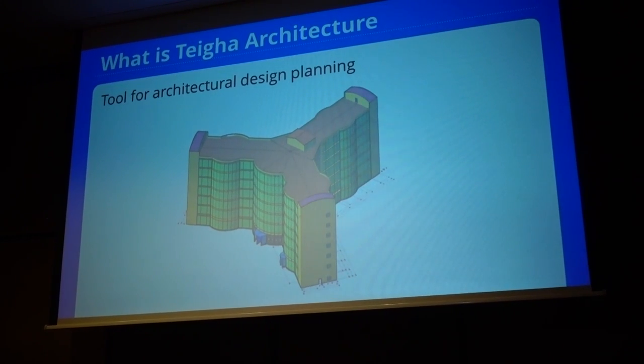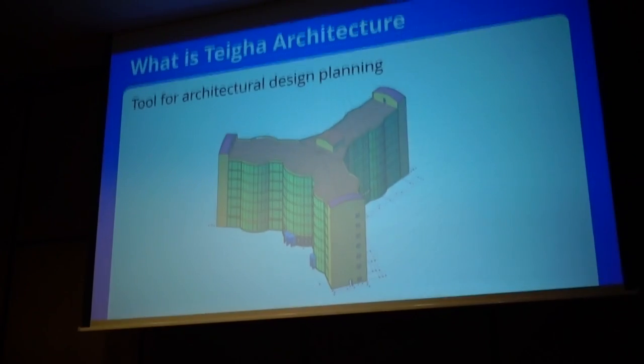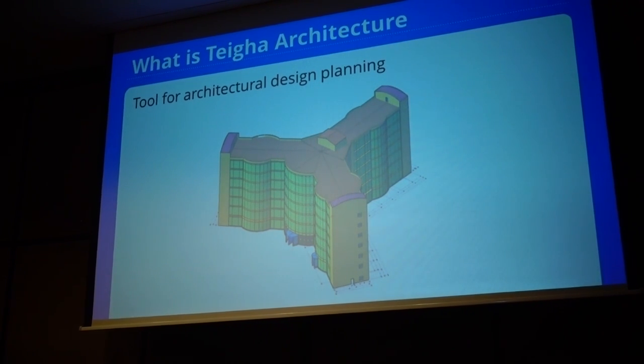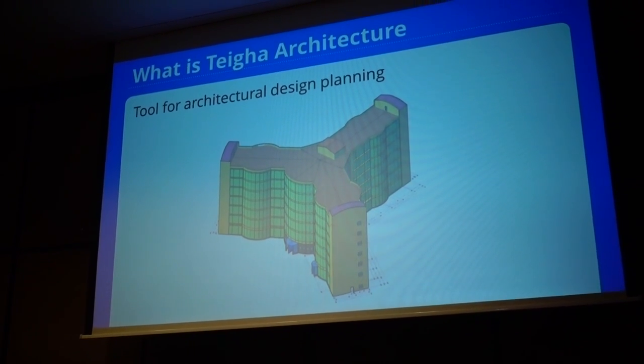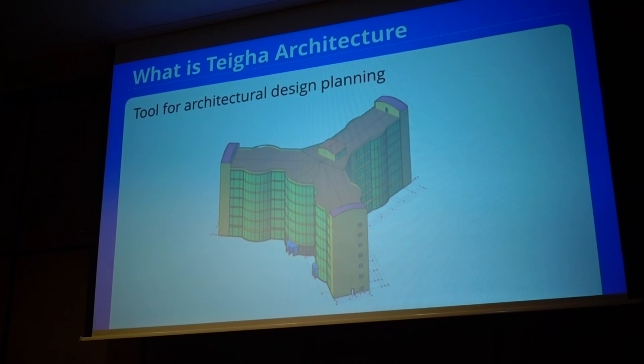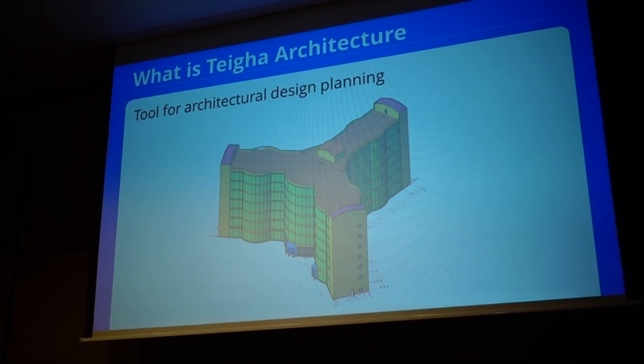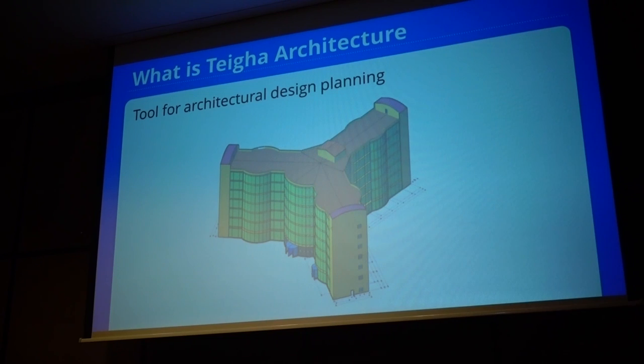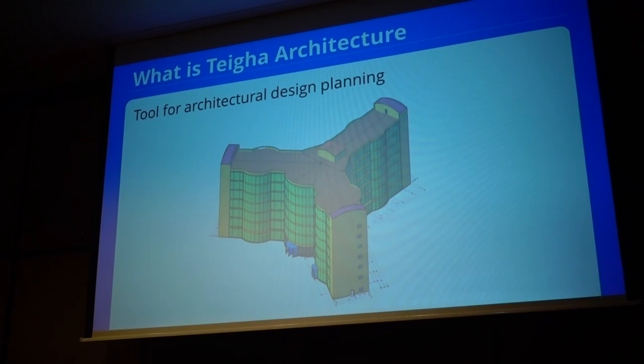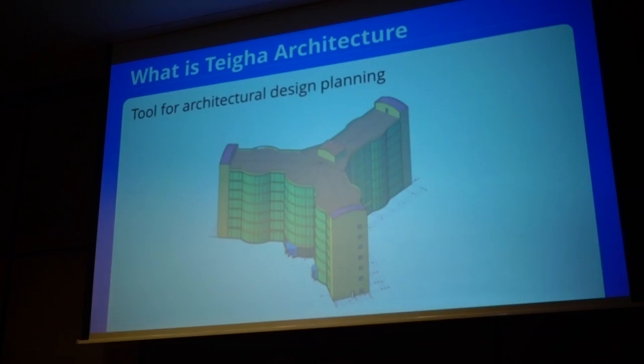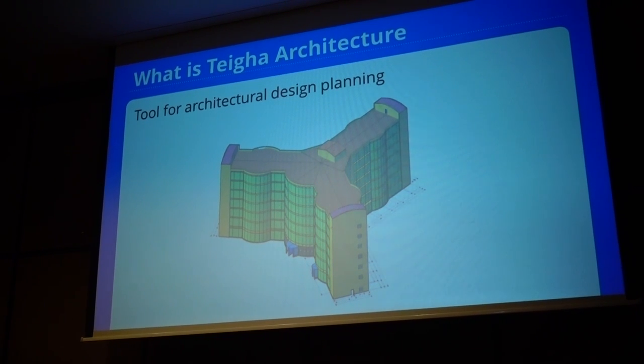Generally, TIGA architecture is a tool for architectural design planning. It's a vertical application based on TIGA core, but unlike core libraries where you have access to basic primitives like lines, text, circles and so on, TIGA for architecture uses an additional set of high-level primitives which are designed for manipulating drawings which represent buildings and architectural planning. So those primitives are walls, doors, windows, stairs and so on.